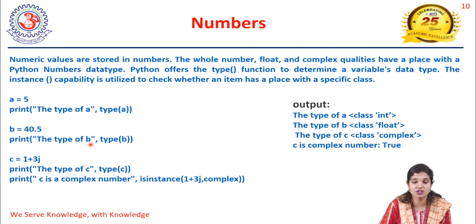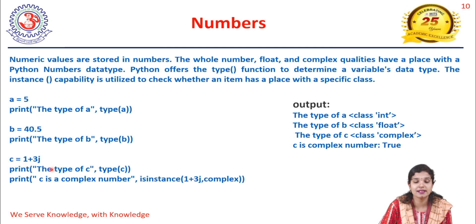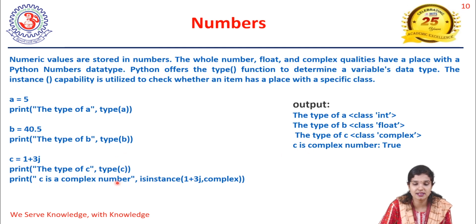For c = 1+3j, printing type(c) returns 'class complex.' We can also check: print('c is a complex number:', isinstance(1+3j, complex)) — since 1+3j is indeed a complex data type, this returns True.